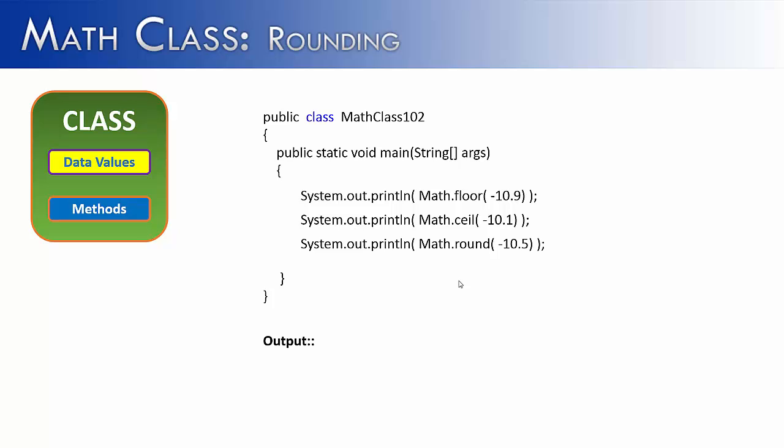One more thing that I wanted to show you about the three rounding methods of the Math class is that they can actually take in negative numbers. You'll see here that I have negative 10.9, 10.1, and 10.5. And when we run this, we have to remember that we're dealing with negative numbers.